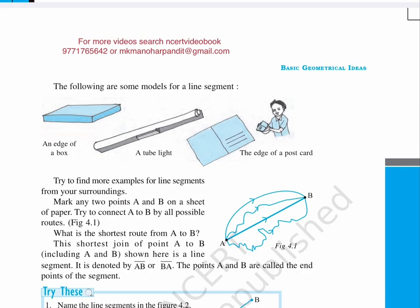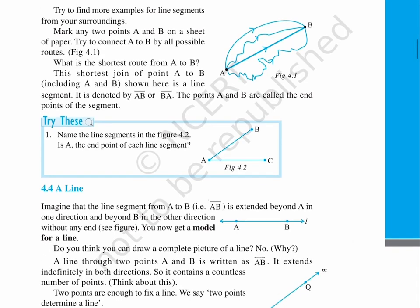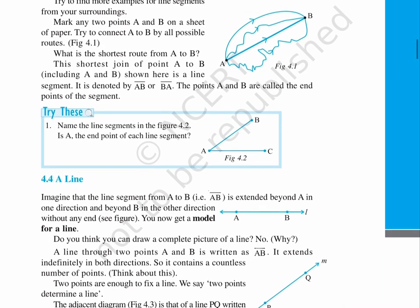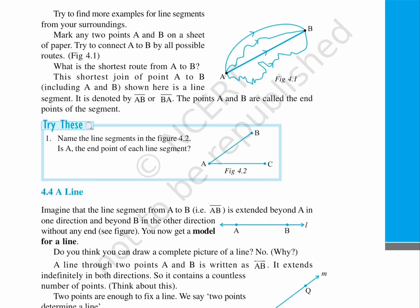This shortest join of point A to B, including A and B, shown here is a line segment. It is denoted by AB with an overhead dash or BA with an overhead dash. The points A and B are called the endpoints of the segment.